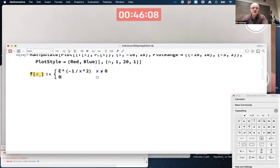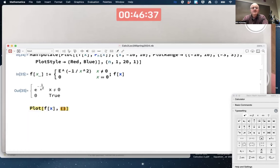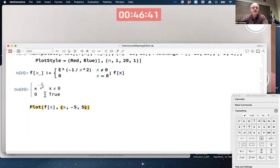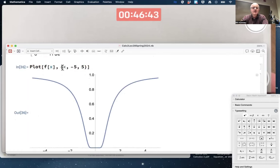But I do want to define this function to be zero when x is zero. You need an extra double equal sign there, otherwise Mathematica sets x equal to zero and we don't want that. What does this function look like over the interval from negative five to five? Looks like that.